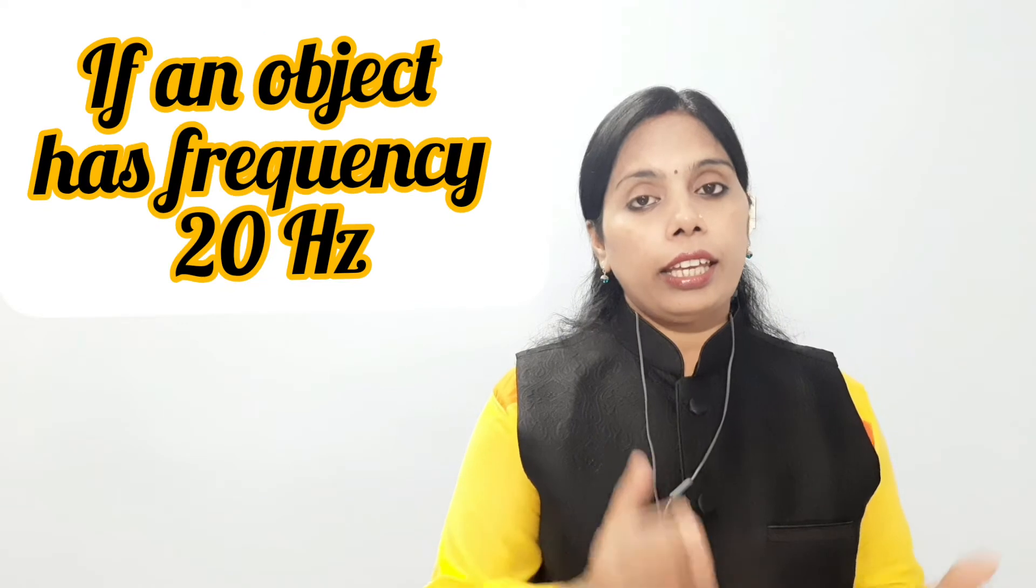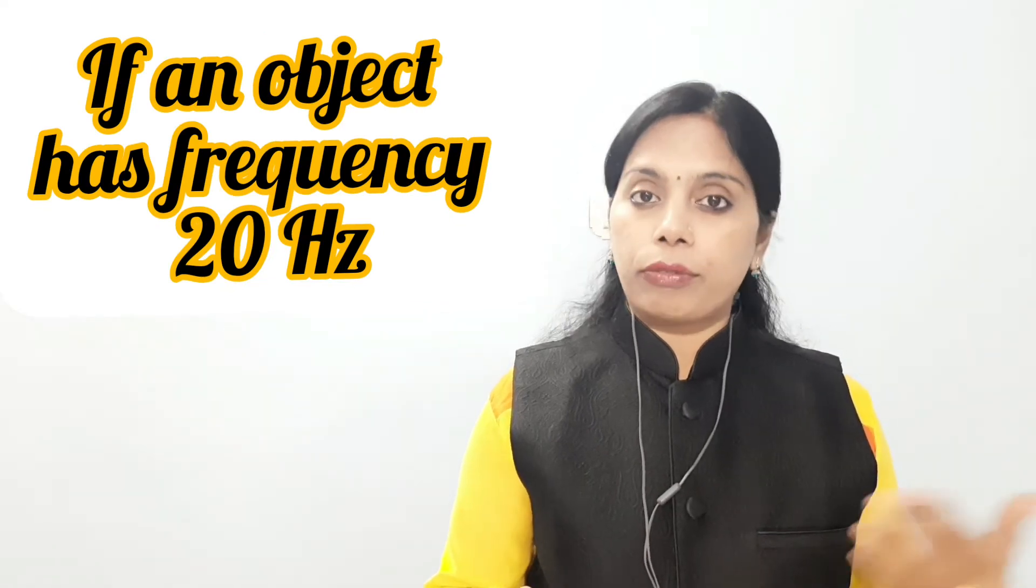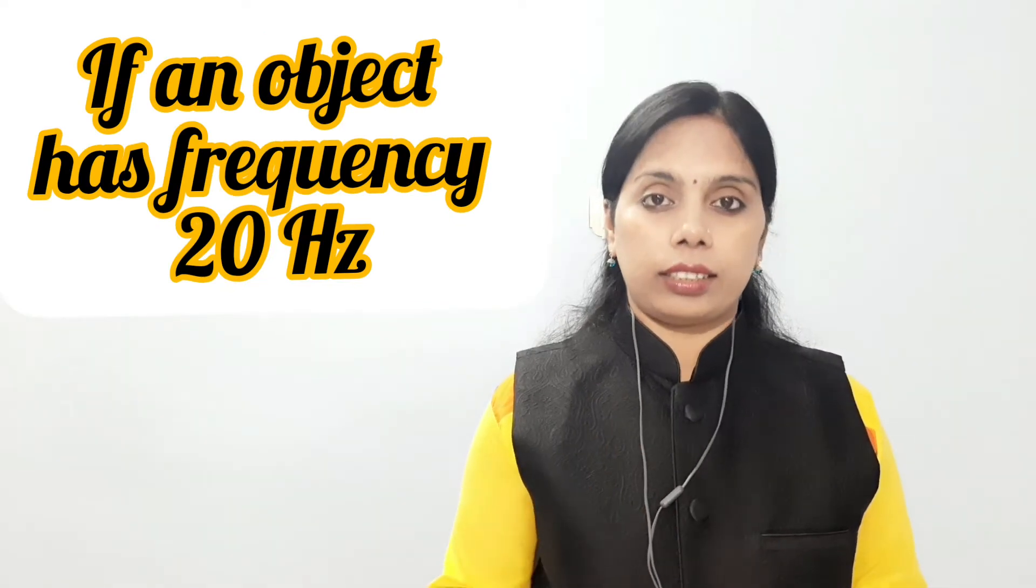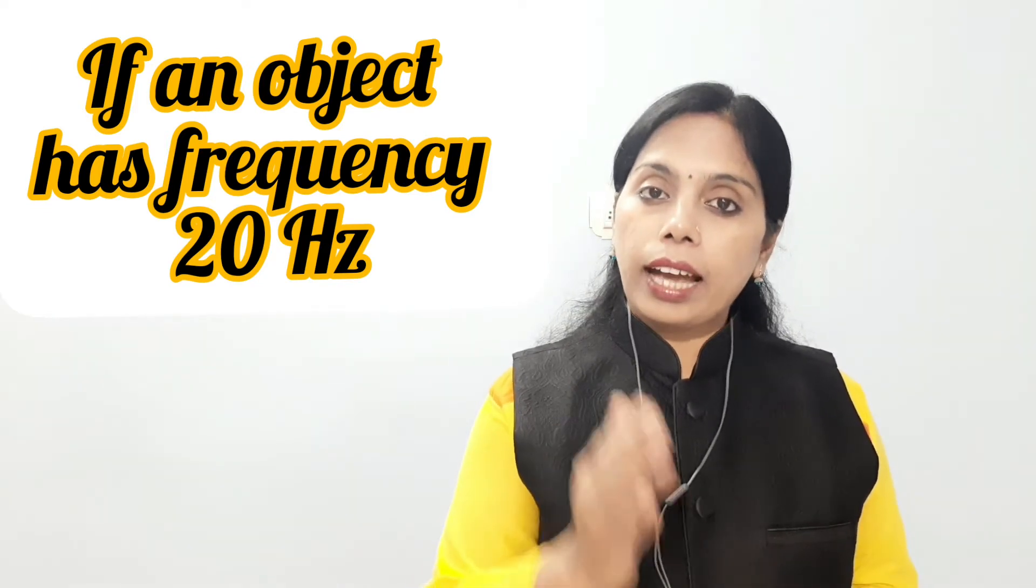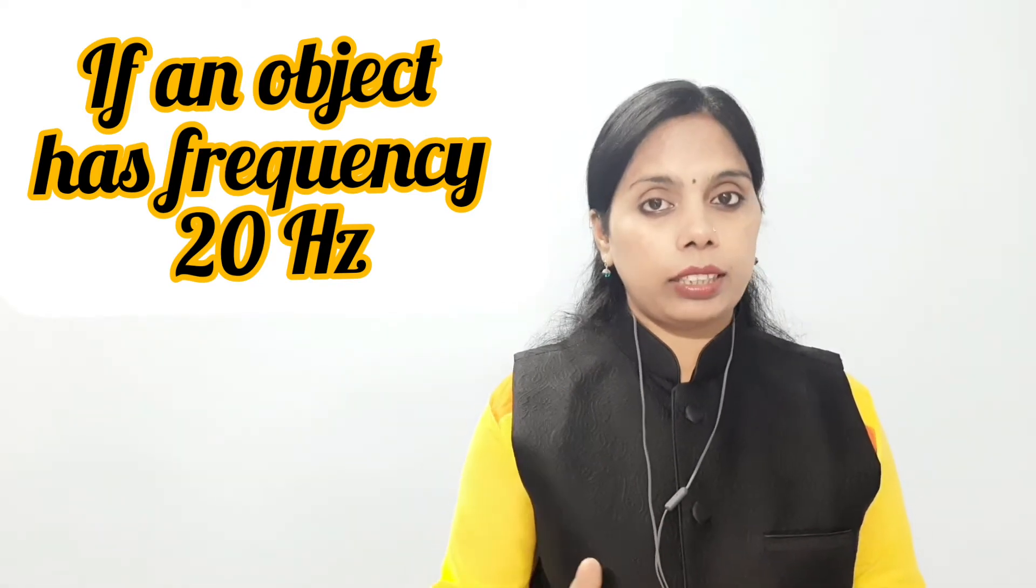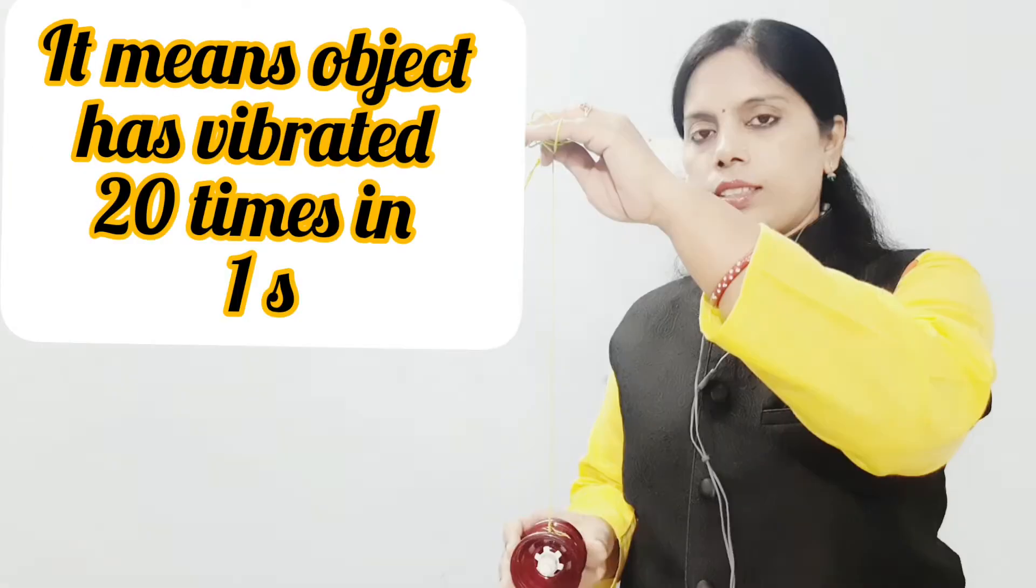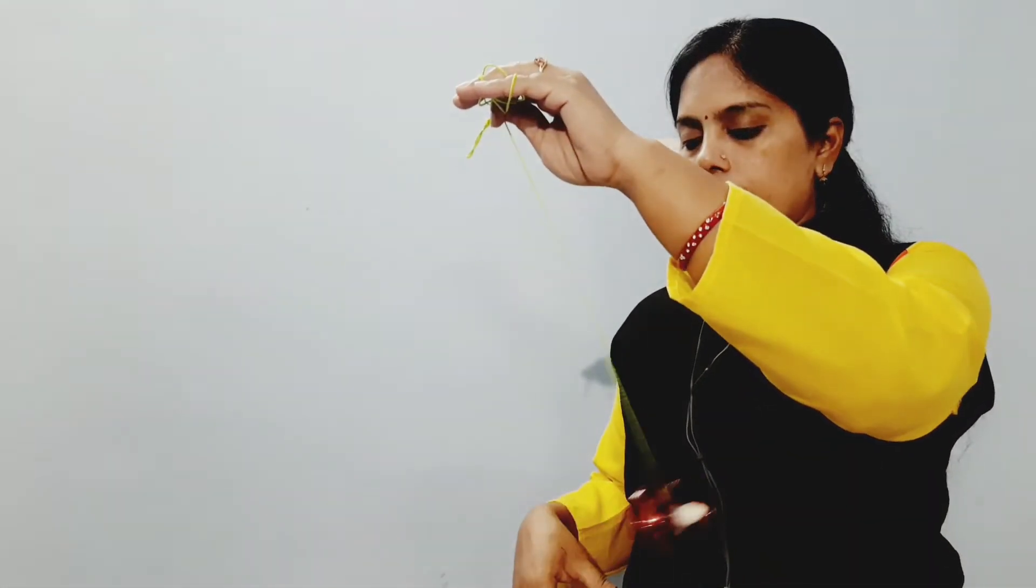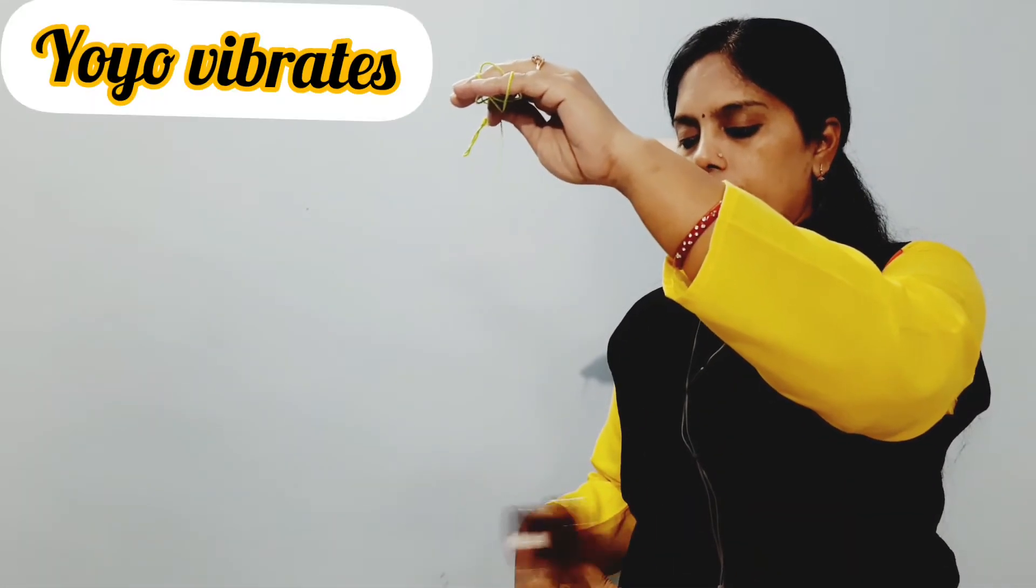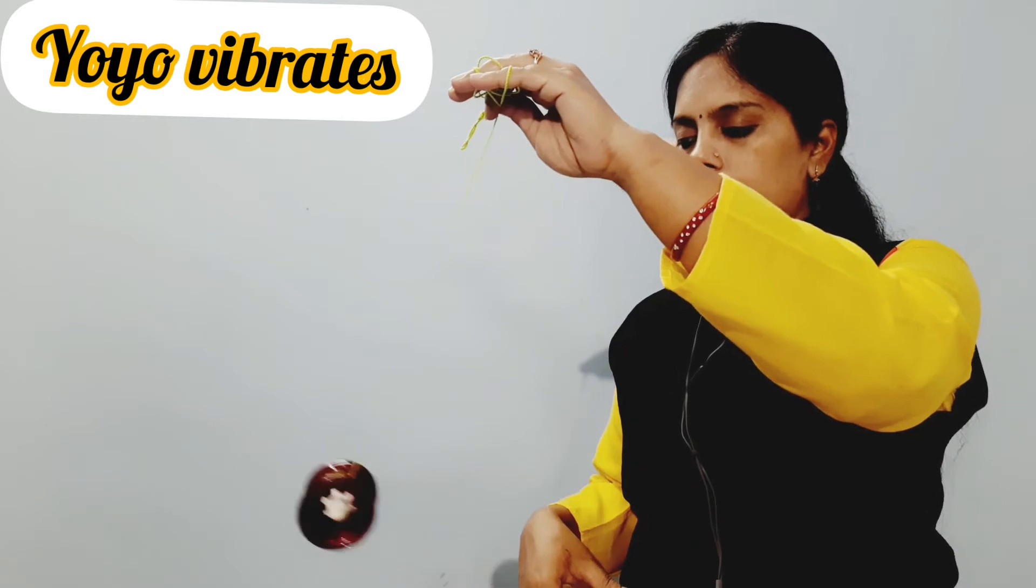For example, if an object has frequency 20 hertz, what it means? It means that that object has vibrated 20 times in one second. As you know, when I release this yoyo, it vibrates. So with the help of this yoyo,